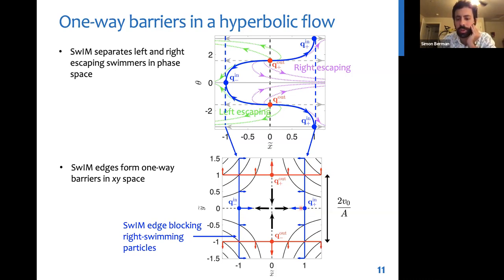And so we have this family of one-way barriers that will restrict the kinds of swimmer trajectories we can have in this flow. So these are our predictions, and now we look at how they turn out in a real experiment.